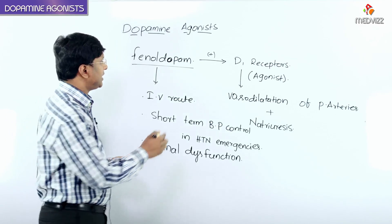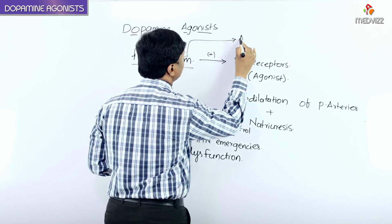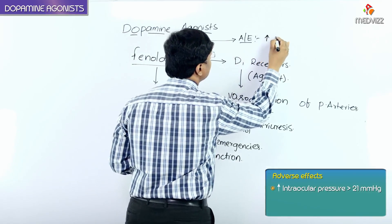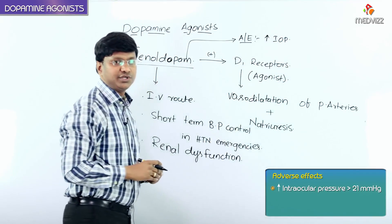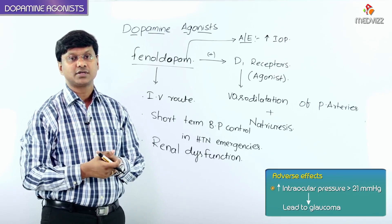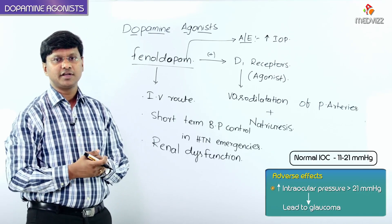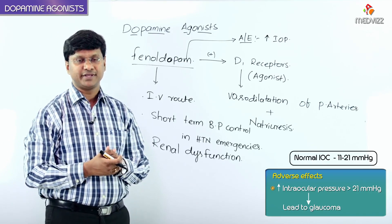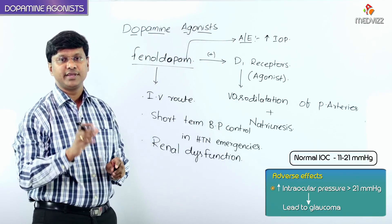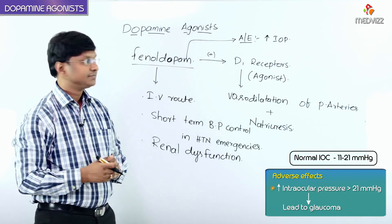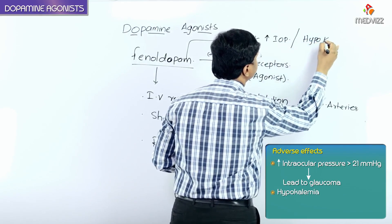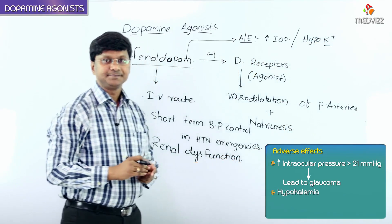Regarding the adverse effects of fenoldopam: it will increase intraocular pressure, which can result in glaucoma. The normal intraocular pressure is around 11 to 21 mmHg. Fenoldopam increases intraocular pressure above 21 mmHg, making the individual susceptible to glaucoma. Another important adverse effect is hypokalemia — it reduces potassium levels in the body.